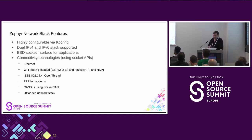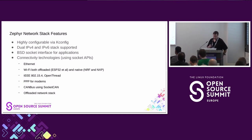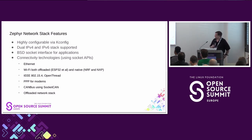There are several connectivity technologies you can use via the socket APIs. For Ethernet, which is the technology used in simulated environments like QEMU or native SIM. For Wi-Fi, there are two alternatives: you can use the offloaded environment, like ESP32, where the Wi-Fi stack is offloaded to the co-processor. And recently, native support for Wi-Fi was integrated — currently there are drivers for Nordic and NXP.